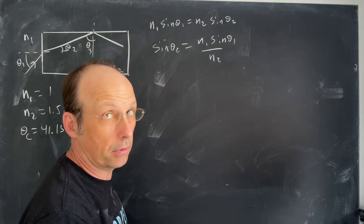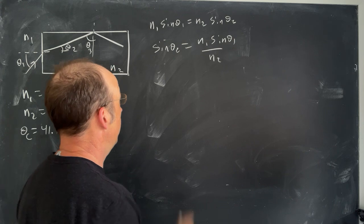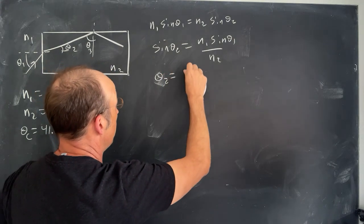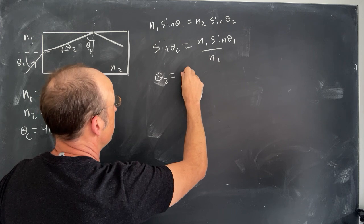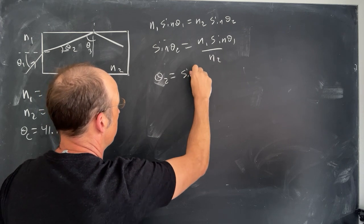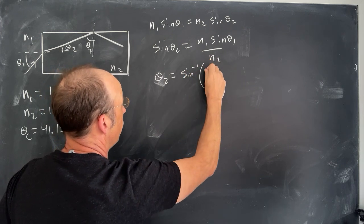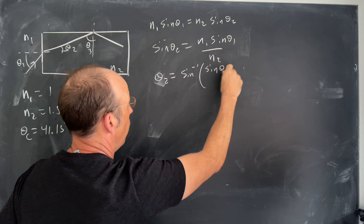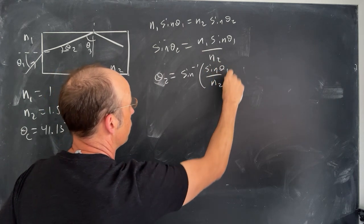N1 over N2 is just a number. Right. And then I can find theta 2, and then I can find theta 2 is going to be the inverse sine of, and N1 is just 1. So it's sine of theta 1 over N2.